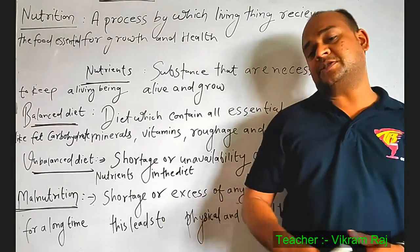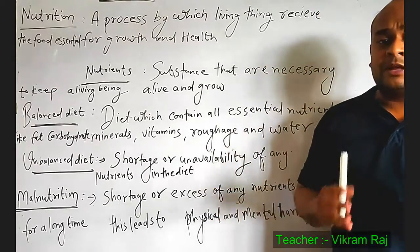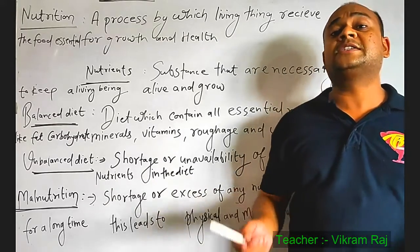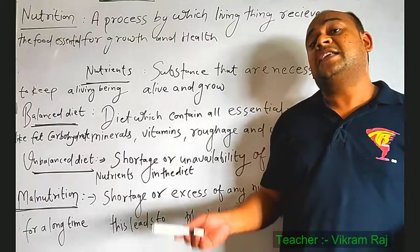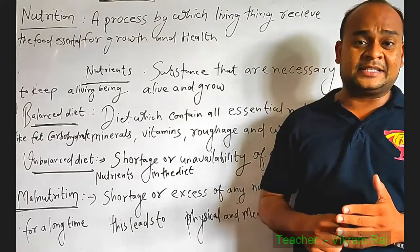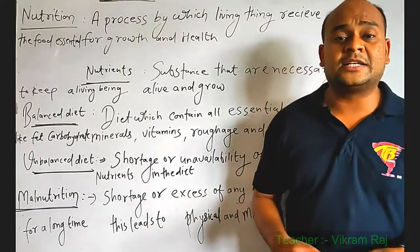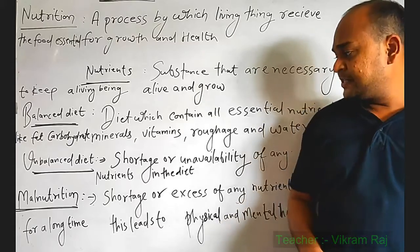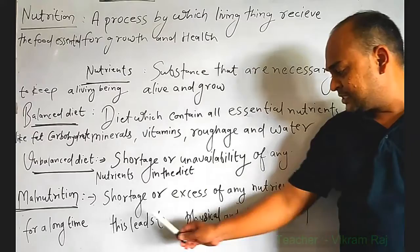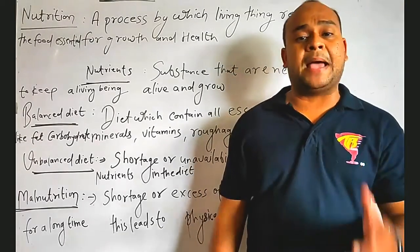What is malnutrition? Malnutrition means that for a long time our diet has been unbalanced — essential components are not being received, or we are consuming essential components in shortage or excess, causing harm to the body. For example, shortage or excess of any nutrients for a long time leads to physical and mental harm. This condition is known as malnutrition.